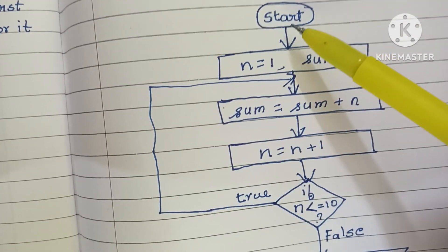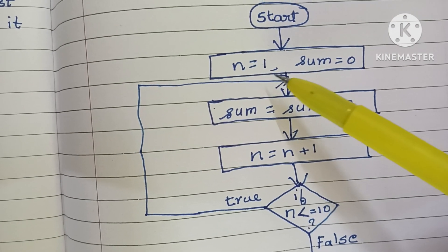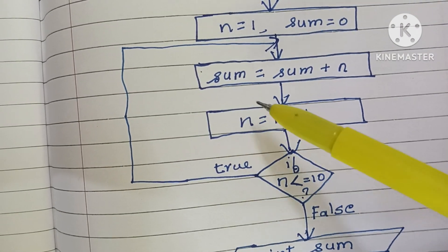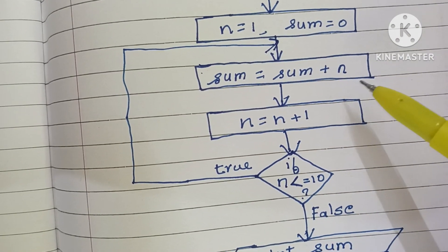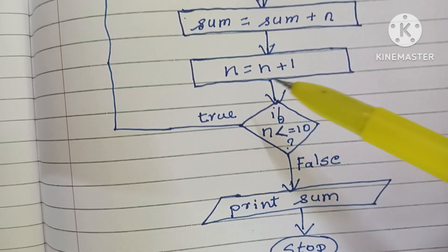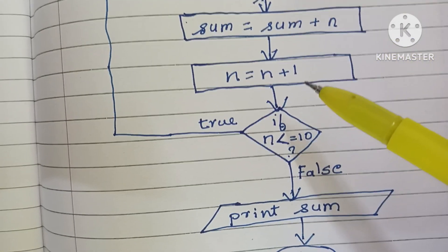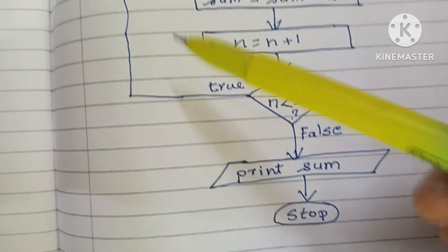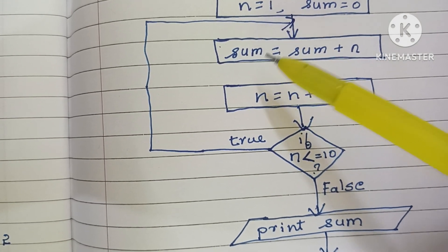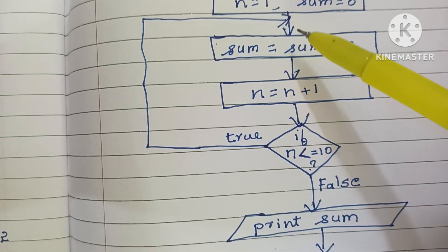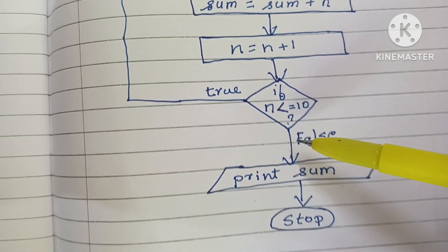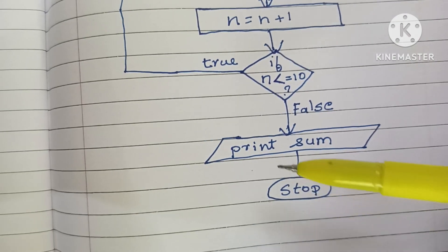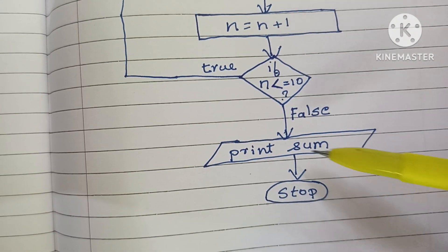The flowchart starts from the start statement within an oval shape. Then we declare n = 1 and sum = 0 within a rectangular shape. We calculate sum = sum + n, then n = n + 1, both within rectangular shapes. We compare if n is less than or equal to 10 — if true, we loop back to calculate sum again; if false, we print the sum value written within a parallelogram shape.